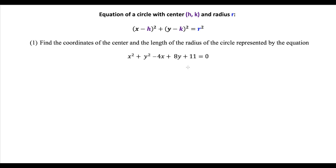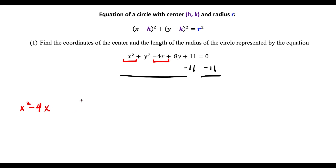For the first question we have this equation, and for questions like this we want to move the constant term to the other side and get all the x and y terms together. So we subtract 11, then group together x squared minus 4x, leave a space, then plus y squared plus 8y, leave a space, and this equals minus 11.